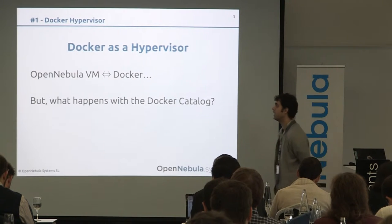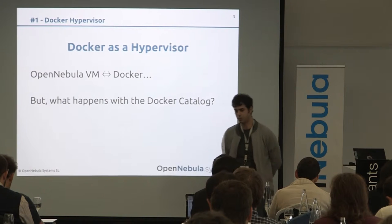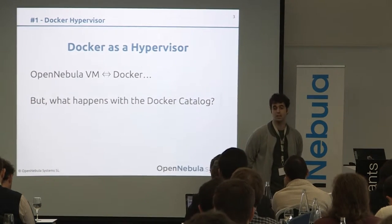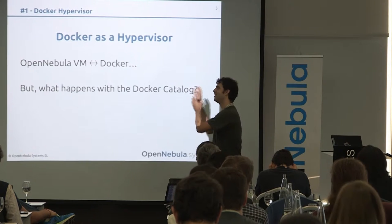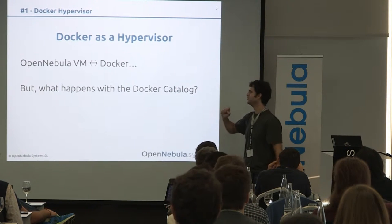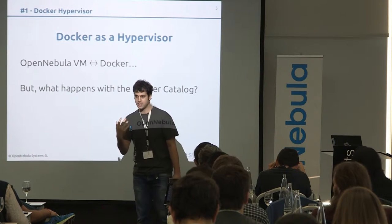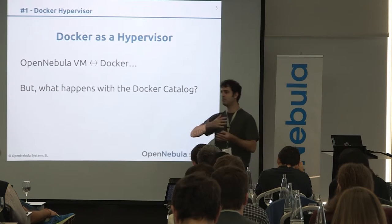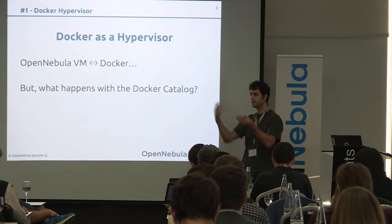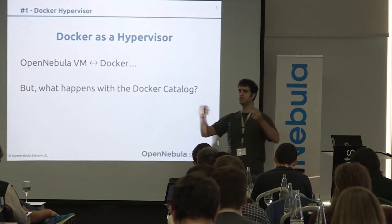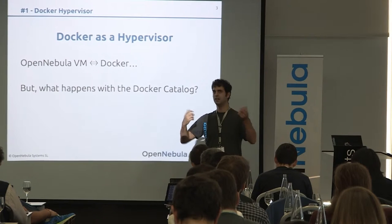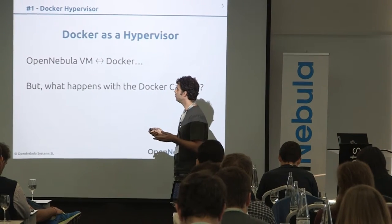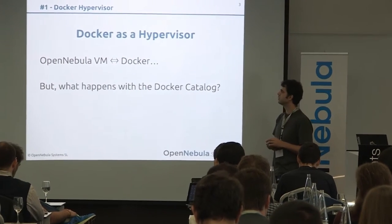The first idea — and the first thing people were asking us to do — was to use Docker as the hypervisor, meaning that when you deploy a new virtual machine, you integrate Docker with OpenNebula. We didn't like this idea because the whole point of Docker is the agile way you handle images and layers, and integrating this with OpenNebula defeats the purpose of Docker.